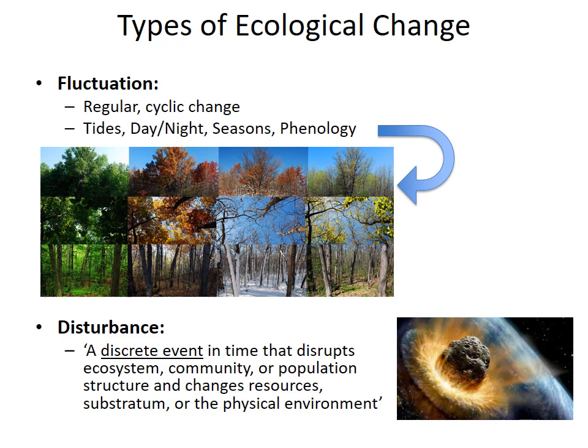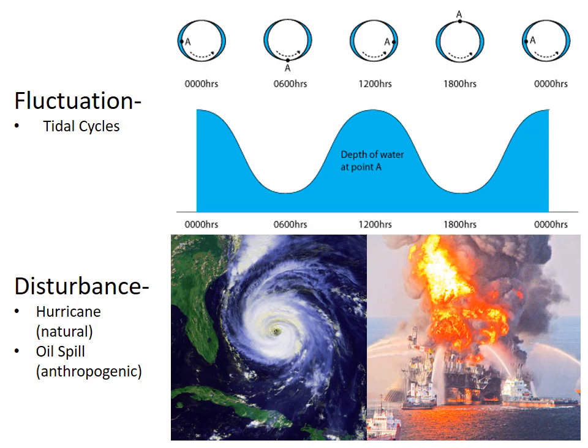In contrast to regular cyclic change, a disturbance is a discrete event in time that disrupts ecosystem, community, or population structure, or changes resources, substratum, and the physical environment. Some big singular event not on a regular schedule — like an asteroid impact — is what we call a disturbance. Examples include regular tidal fluctuations versus rare, unpredictable events like a hurricane or a man-made disturbance like an oil spill — a singular event in time that causes a big environmental change.